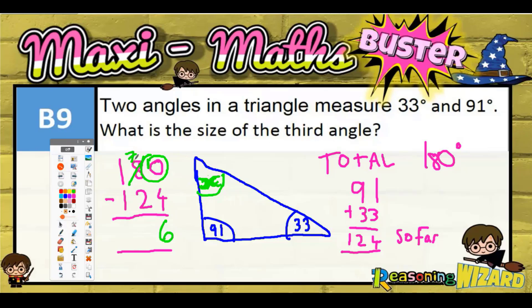1 take away 1 is nothing, so it's going to be 56. So angle x is going to be 56 degrees. Final answer: 56 degrees.